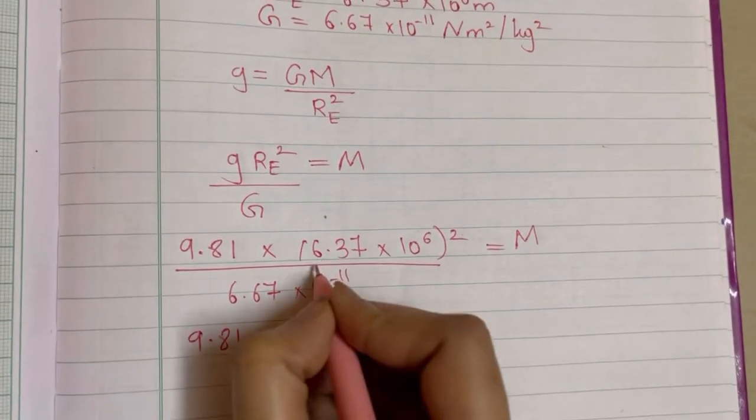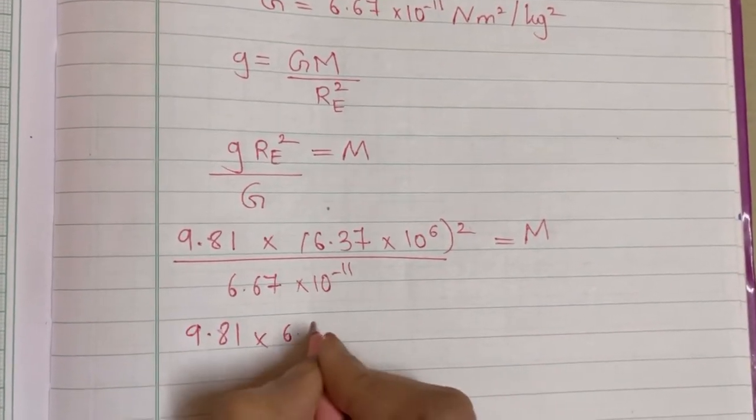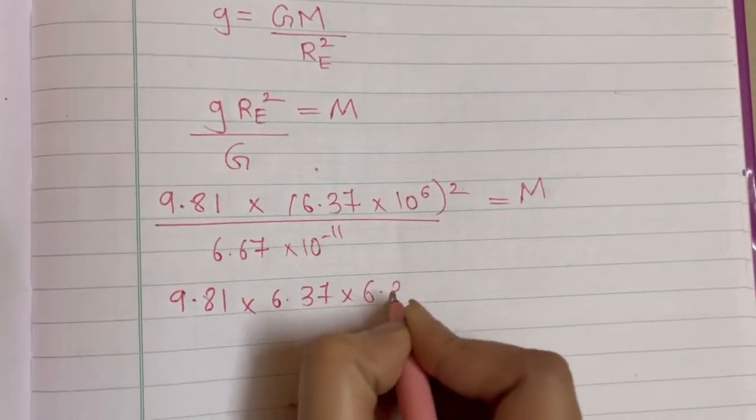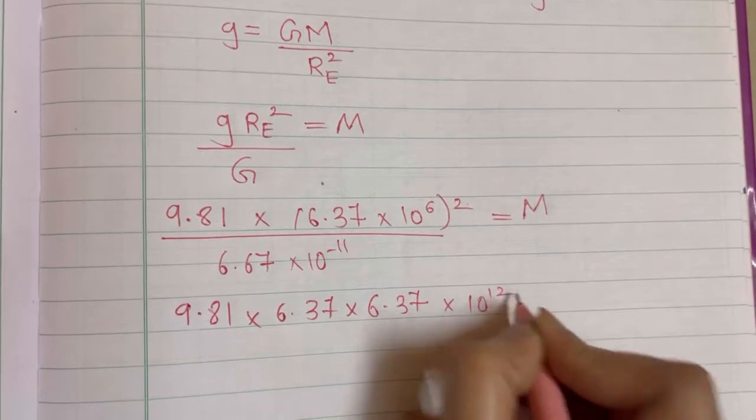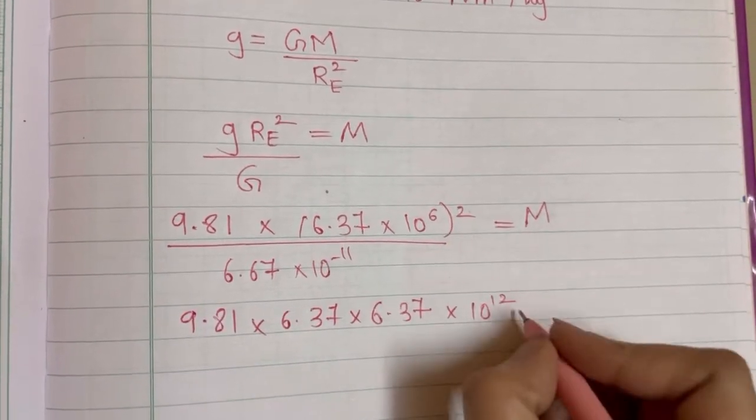So 9.81 square of 6.37, that is 6.37 into 6.37 into square of 10 raised to 6 is 10 raised to 12. If you take this 10 raised to minus 11 in the numerator, that becomes 10 raised to positive 11 and 6.67 is left in the denominator.